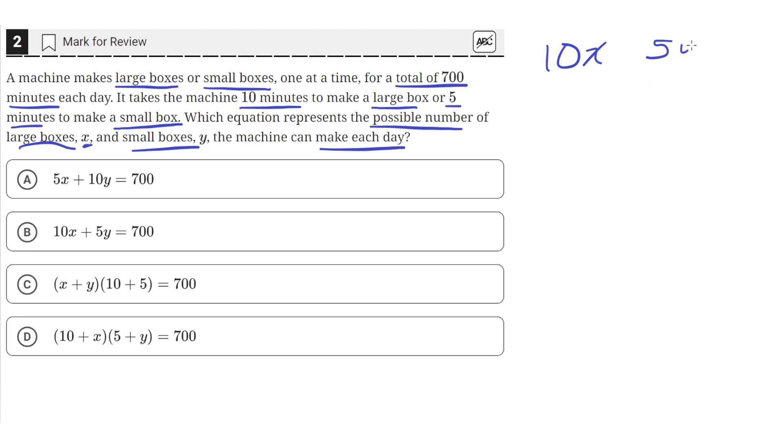And the same for small boxes. Y is the number of small boxes, so multiplying that with 5, the time required to make a small box, gives us the total time spent on making small boxes. And if we add those two together, we'll get the total time spent making all the boxes.